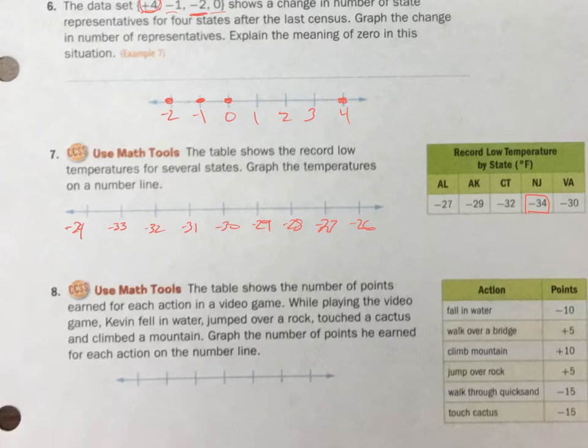But let's see. Let's start with this one right here, negative 27, right there. Then we go to this one, negative 29, right there. Negative 32, just did that one. And then negative 34, we started with that one. And negative 30. So I just graphed all those points on that graph on a number line.